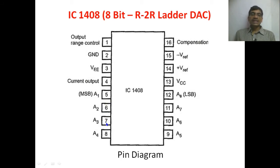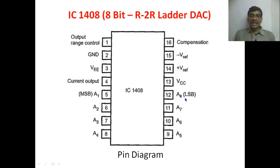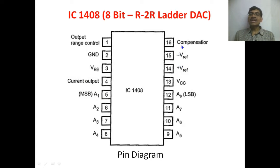A3 is given to the seventh pin, A4 is given to the eighth pin, A5 to the ninth pin, A6 to the tenth pin, A7 to the eleventh pin, and A8 (the LSB) to the twelfth pin. The thirteenth pin is VCC, the fourteenth pin is the plus V reference voltage, the fifteenth pin is the minus V reference voltage, and the sixteenth pin is the compensation pin. These are all the different pins present in IC 1408.